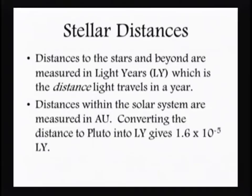The word is light years, and it's given the symbol LY, but it really is measuring a distance. A light year is the distance that light travels in a year. The speed of light is 3 times 10 to the 8 meters per second, or if you're not used to thinking in metric, it's 186,000 miles per second.